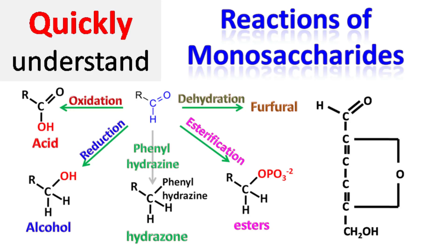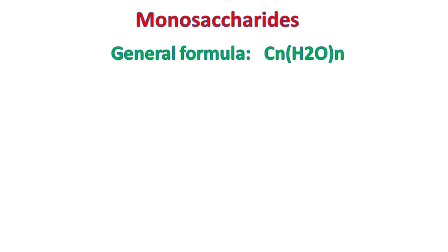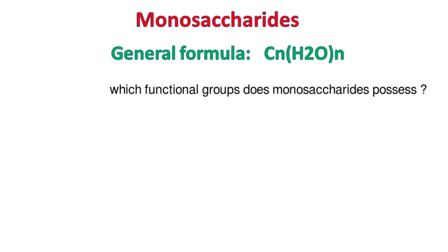Hey everyone, quick biochemistry basics here. Let's talk about reactions of monosaccharides. Monosaccharides are the simplest carbohydrates found in nature and they have a general formula C-N(H2O)-N. To understand what kind of chemical reactions a monosaccharide undergoes, we must first figure out what functional groups the monosaccharide possesses.